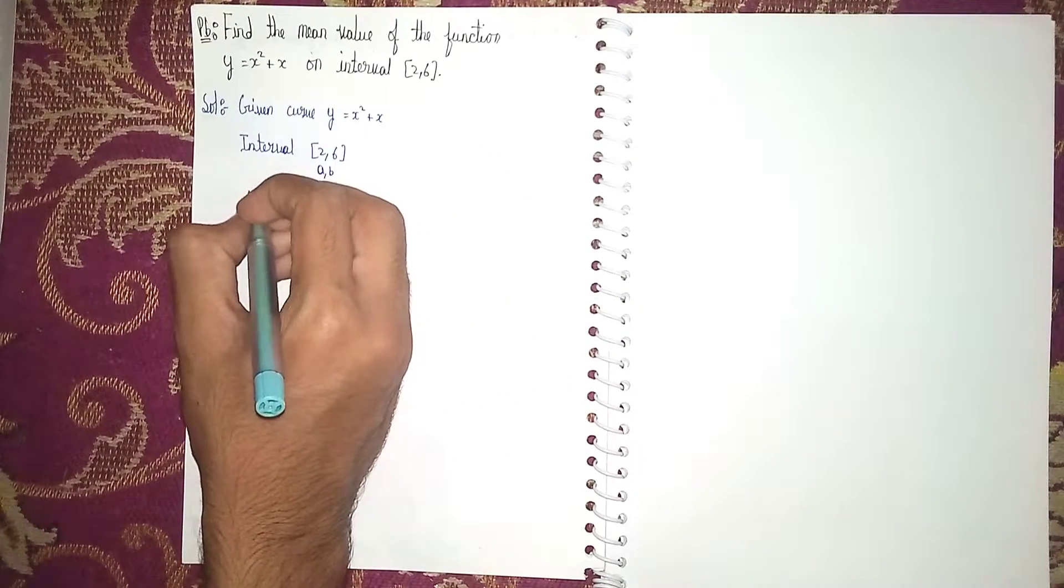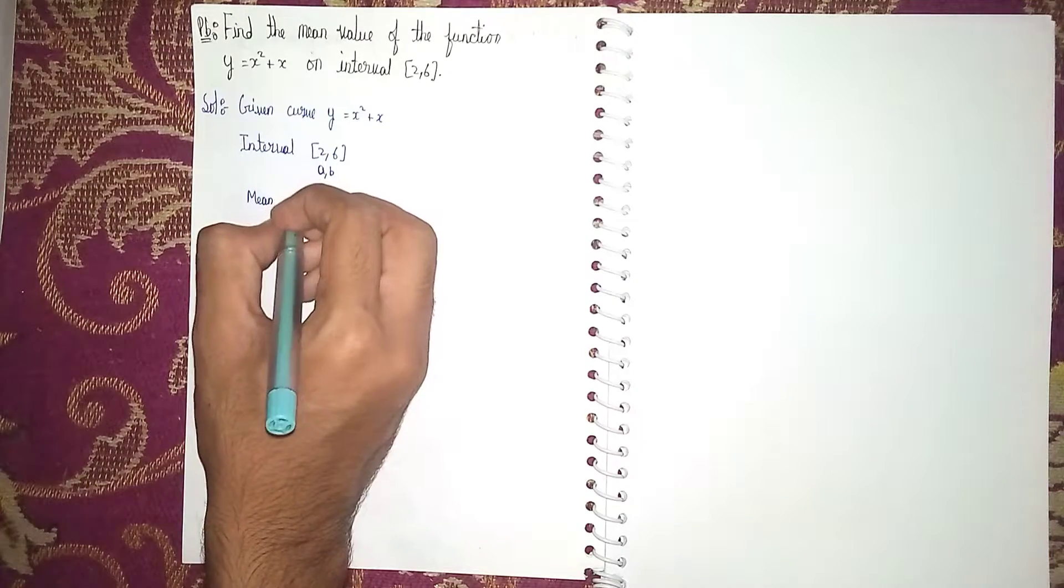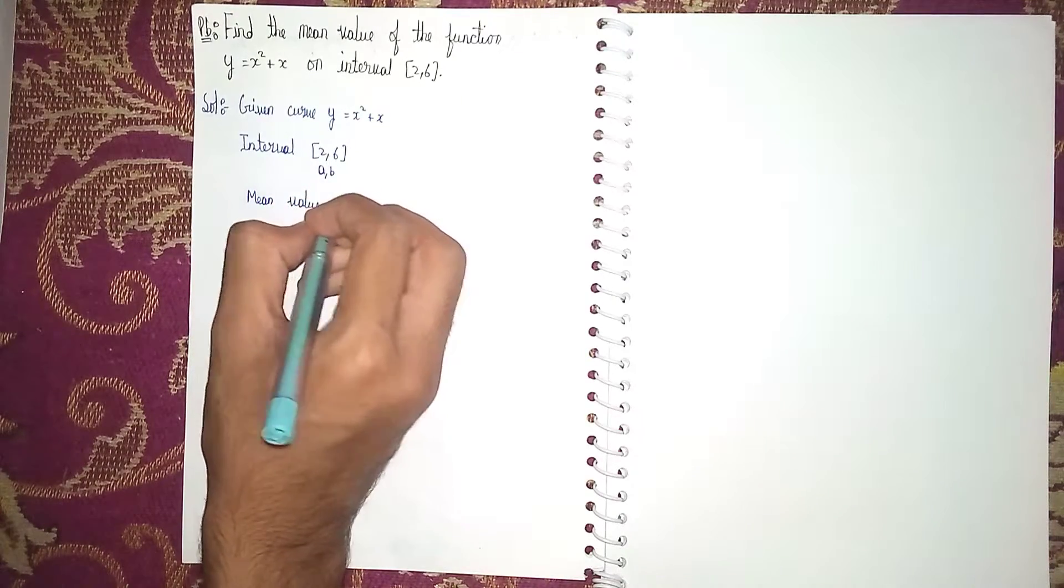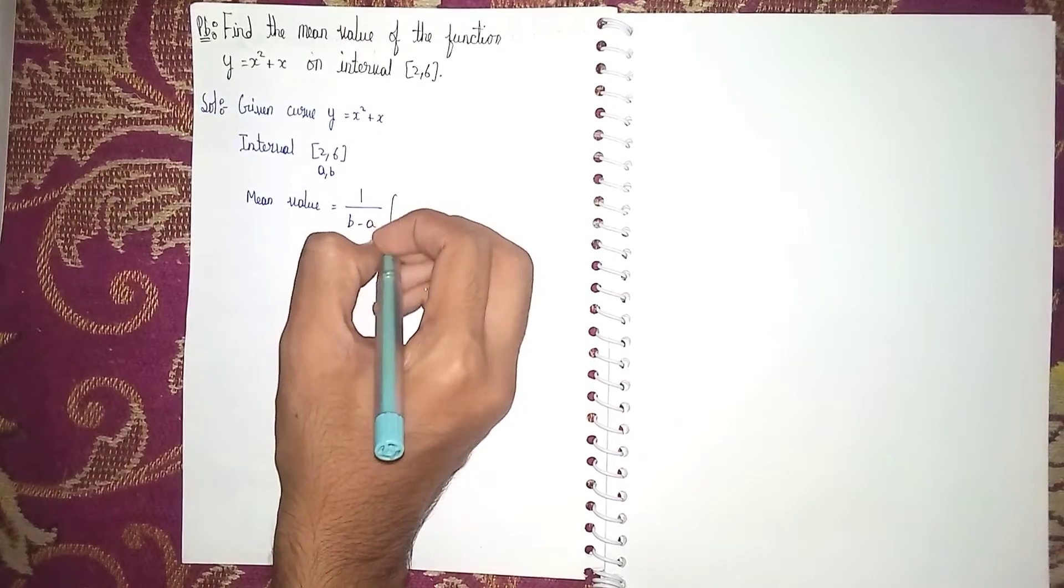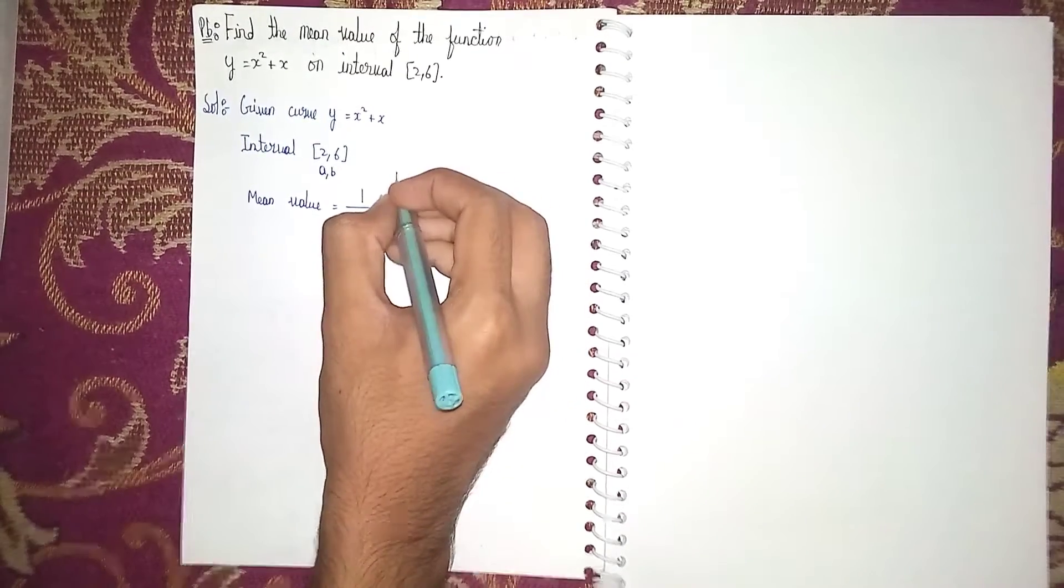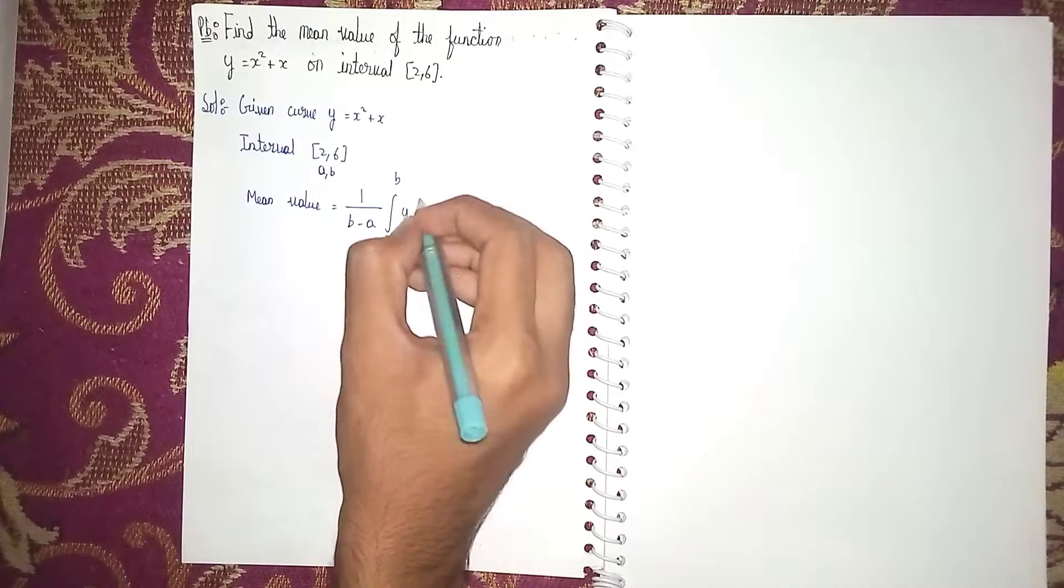The mean value formula is: mean value = 1/(b - a) × integral from a to b of y dx.